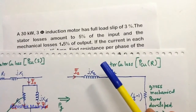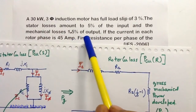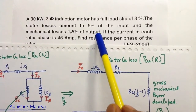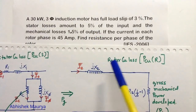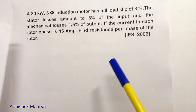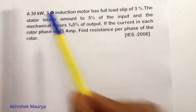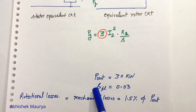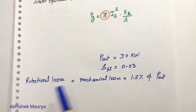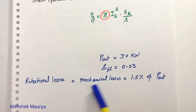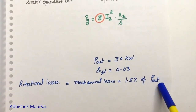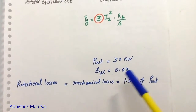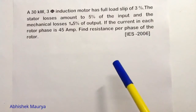In the question, the mechanical losses are 1.5 percent of the output. The output of the three-phase induction motor is 30 kilowatt. The full load slip s is given as three percent, which is 0.03, and the rotational losses or mechanical losses are 1.5 percent of the output power.